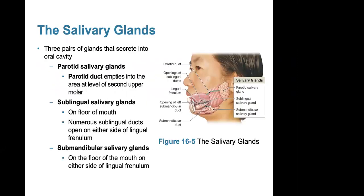The salivary glands consist of three pairs of glands that secrete into the oral cavity. The parotid salivary gland has a parotid duct that enters the area of the second upper molar. The sublingual salivary gland is on the floor of the mouth with various ducts releasing secretions. The submandibular gland is also on the floor of the mouth on either side of the lingual frenulum.